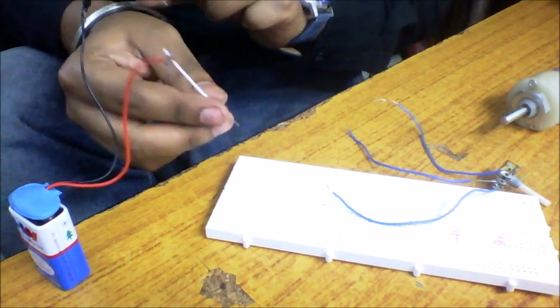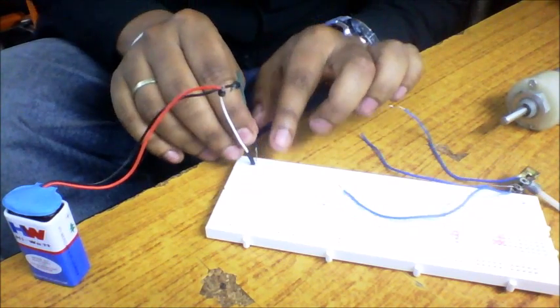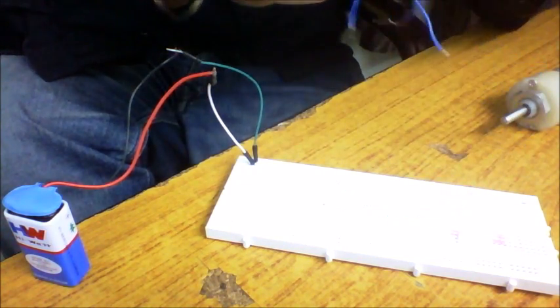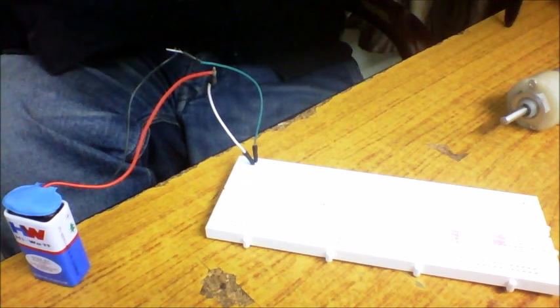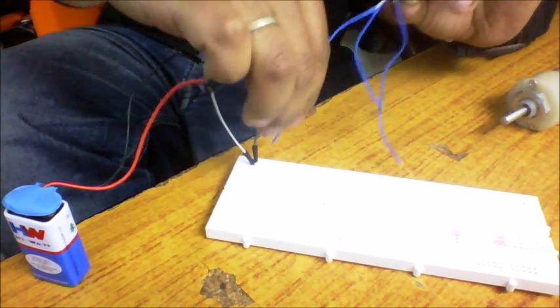So we will be connecting the positive terminal of the battery to the breadboard and negative on the side of the breadboard. Now we will connect the positive terminal of the potentiometer to the plus of the battery.